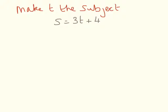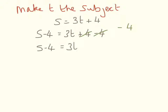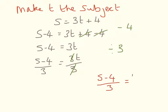Here again we need to make t the subject of the formula, and we have an extra 4 on the right hand side. So the first thing we need to do is to minus 4: s minus 4 equals 3t plus 4 minus 4. The plus 4 and the minus 4 cancel each other out, so we have s minus 4 equals 3t. We divide by 3 to get rid of it from the right hand side, giving us s minus 4 divided by 3 equals t.